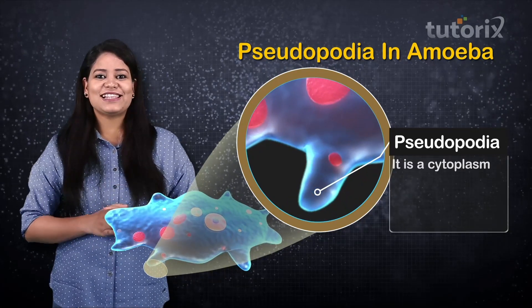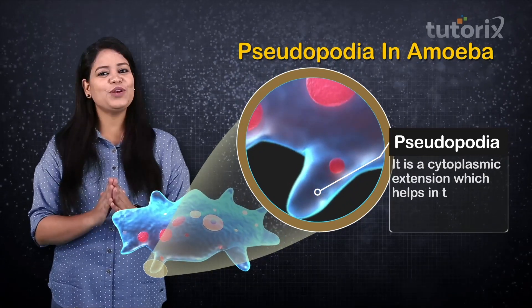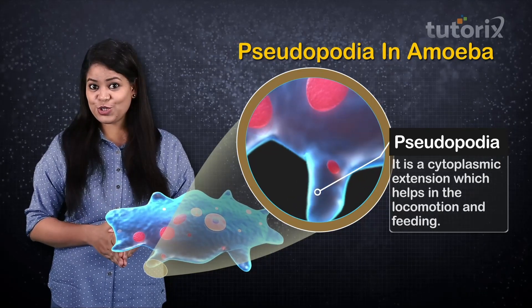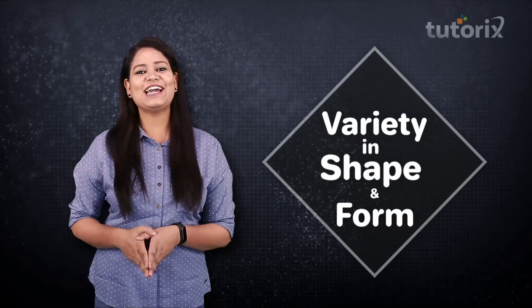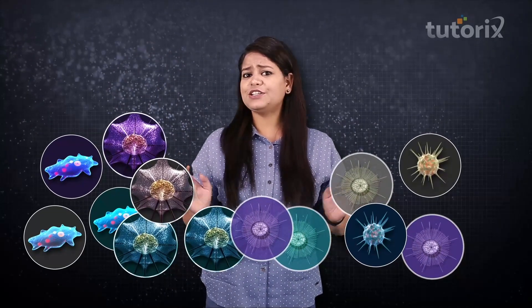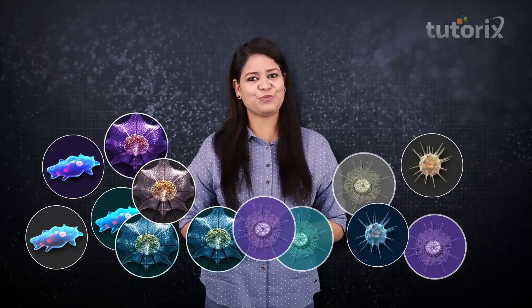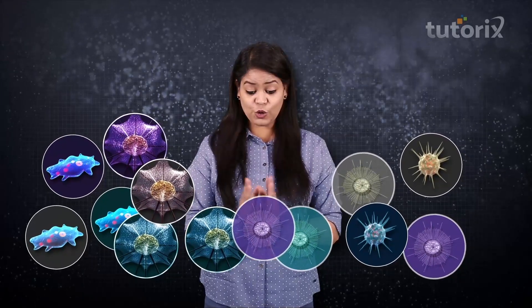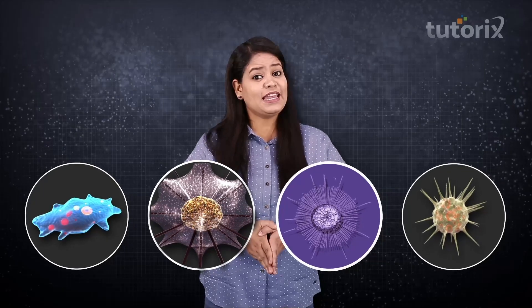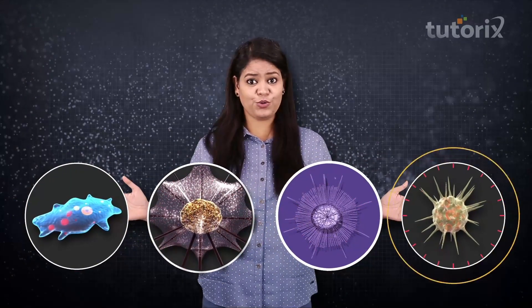A pseudopodium is a cytoplasmic extension which helps in locomotion and feeding. The pseudopodia exhibit variety in their shape and form. Different organisms have different types of pseudopodia. If we group these organisms based on the shape and form of their pseudopodia, we will have four groups.